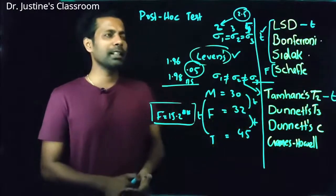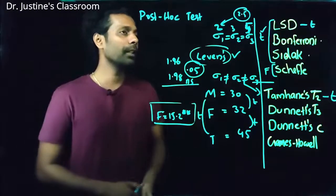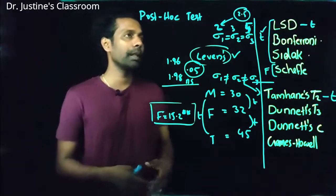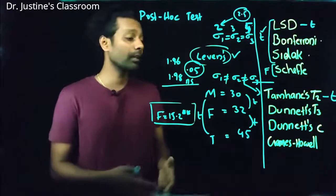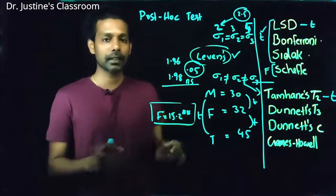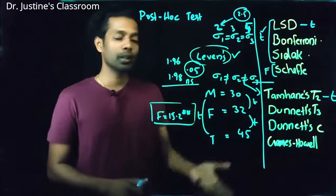And the Dunnett's T3, this particular method is based on studentized maximum modulus values, not basically T distribution. It's studentized, not standardized.